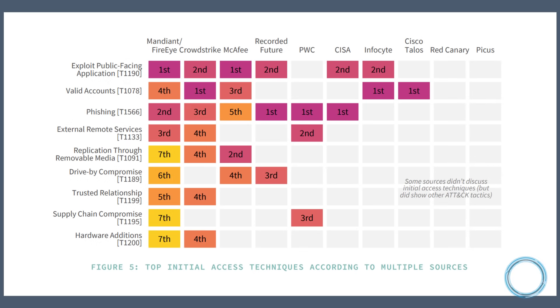Now a lot of reports say exploiting public-facing websites is a top technique, but MITRE's attack framework reports only 12% of threat groups use web exploits for initial access.